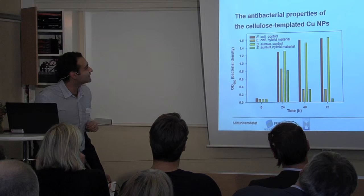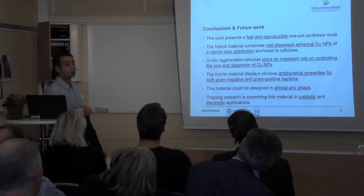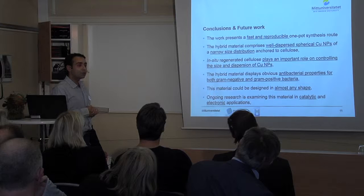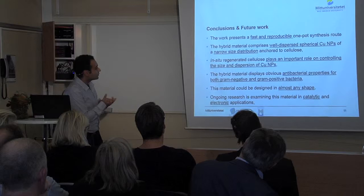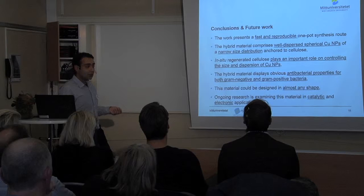To summarize, this work presents a fast and reproducible one-pot synthesis route to produce cellulose-based hybrid material decorated with copper nanoparticles. The hybrid material comprises well-dispersed spherical copper nanoparticles with a narrow size distribution. In-situ regenerated cellulose plays an important role in controlling the size and dispersion of copper nanoparticles inside the cellulose matrix. The hybrid material displays obvious antibacterial properties for both gram-negative and gram-positive bacterial strains, can be designed in almost any shape, and our ongoing research is examining this material in catalytic and electronic applications.